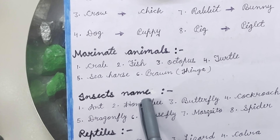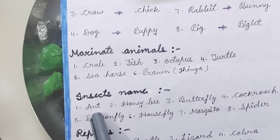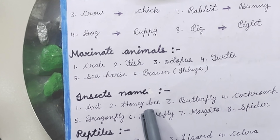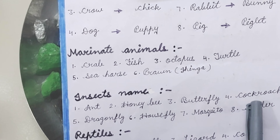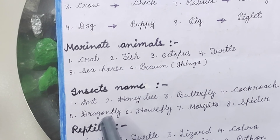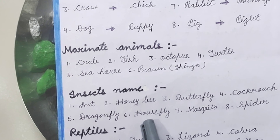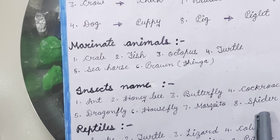Insect Names: Honey Bee, Butterfly, Cockroach, Dragonfly, Housefly, Mosquito, Spider.